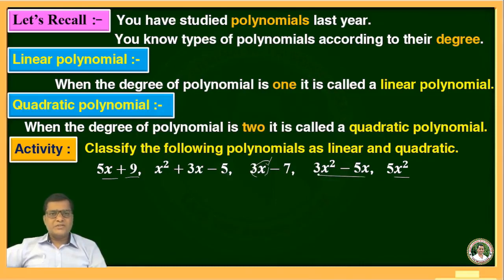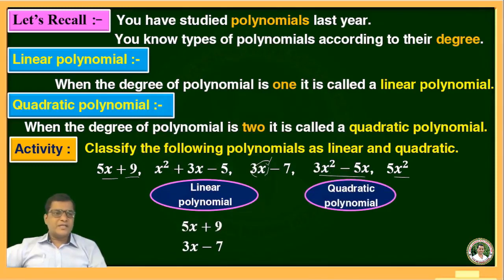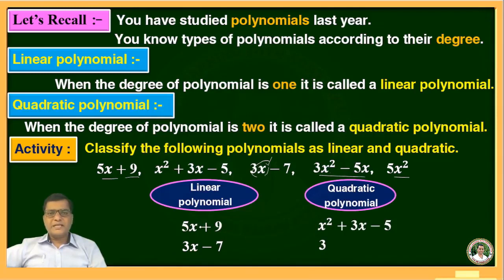We will write the Linear Polynomial and Quadratic Polynomial results. The Linear Polynomials are: 5x + 9 and 3x − 7, because the degree of these polynomials is 1. The remaining are Quadratic Polynomials: x² + 3x − 5, 3x² − 5x, and 5x².